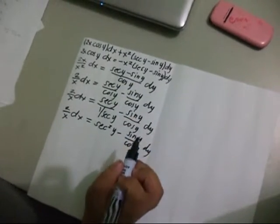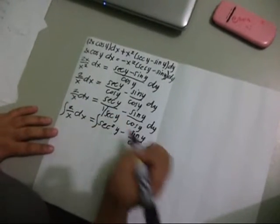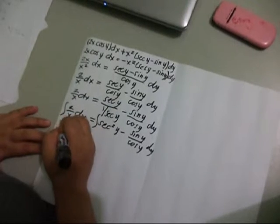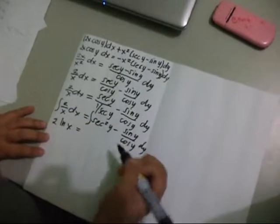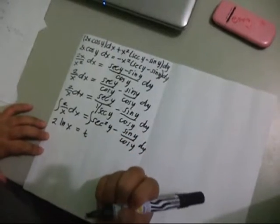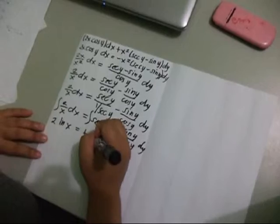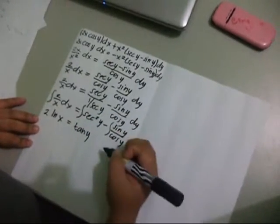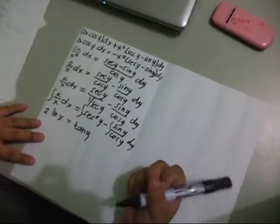Then, integrating both sides will have 2 ln of x is equal to the integral of sec squared y, which equals tangent y. And for this integral, we have to introduce a new variable.